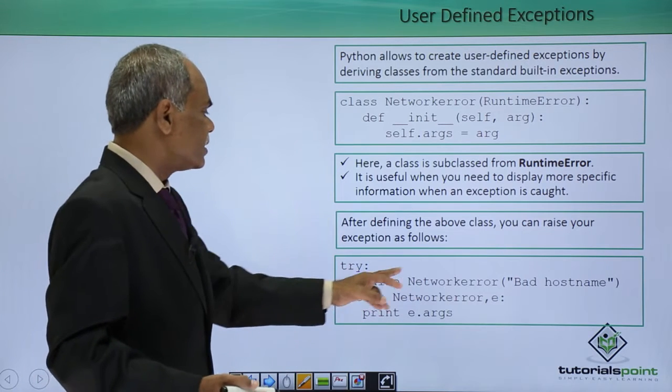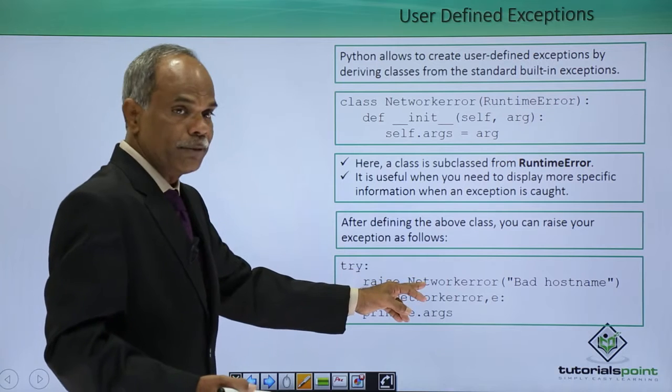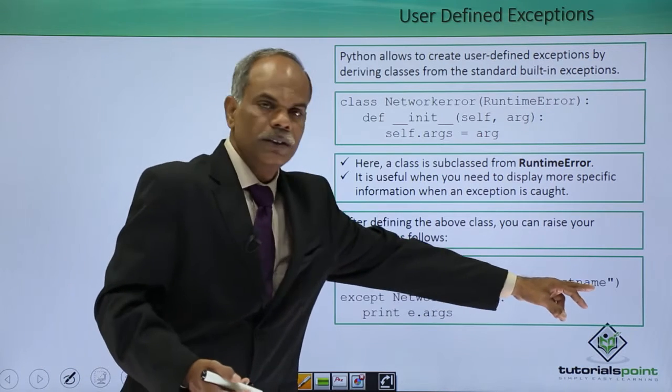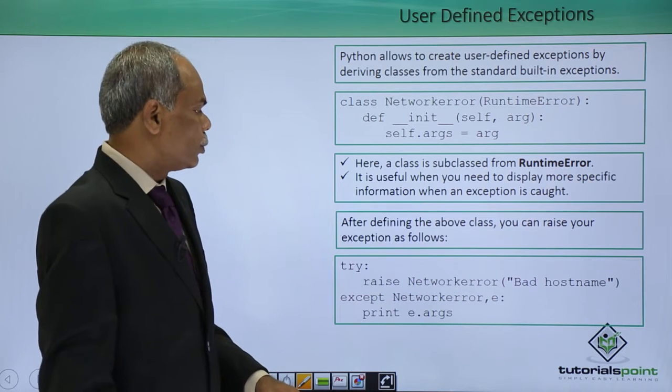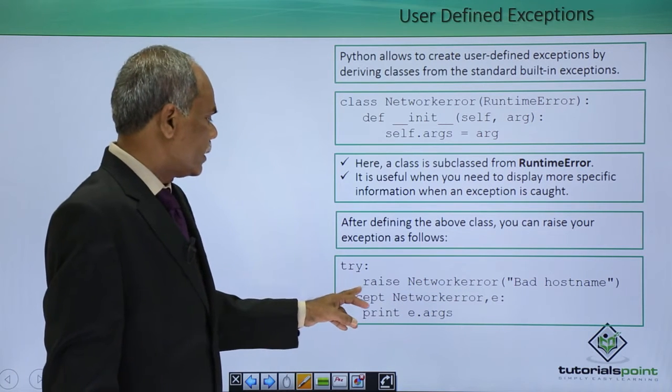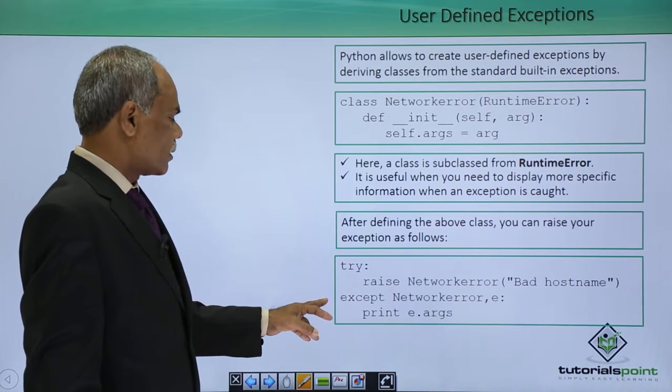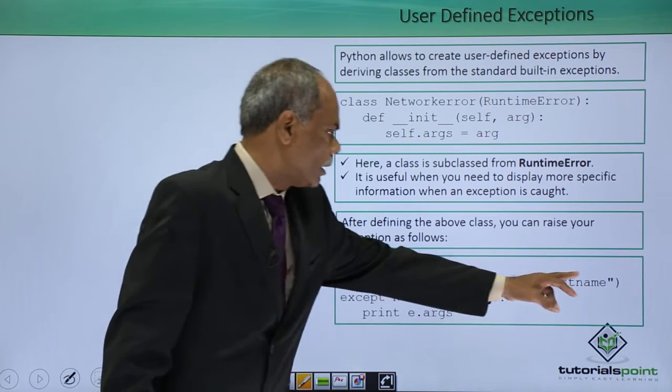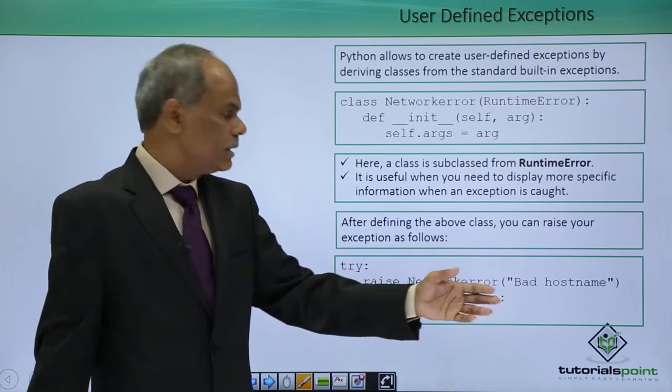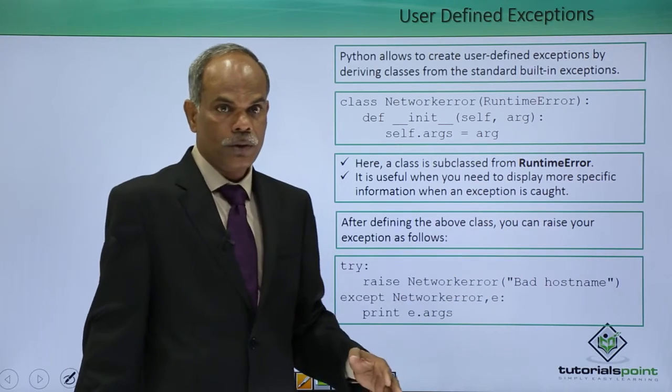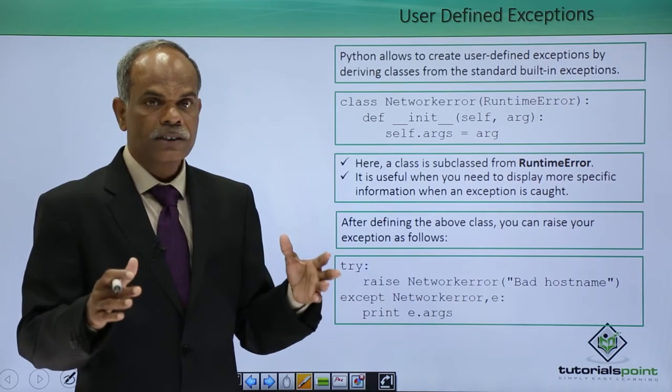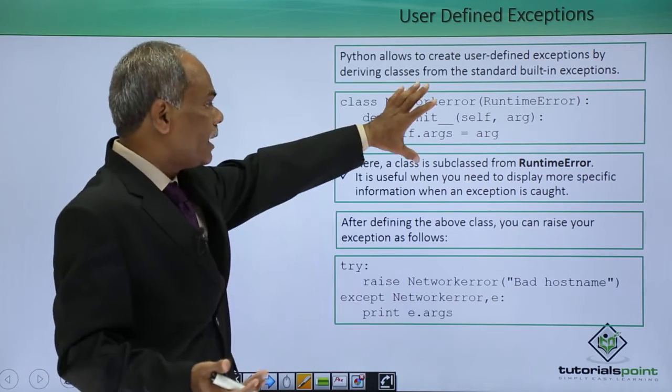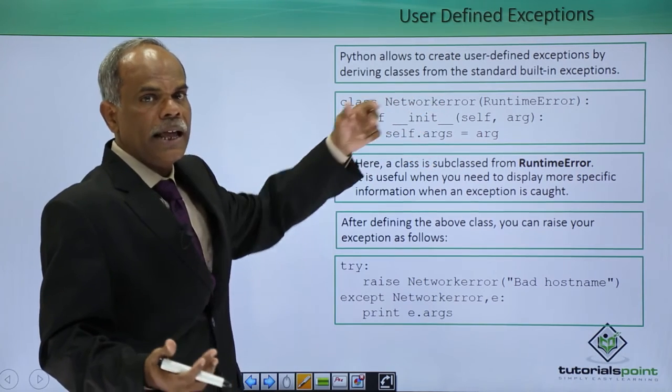This is the class, the type of the error exception. Raise NetworkError with the argument to be provided to it. You can catch it with the help of except NetworkError as e, then print e.args. It will print the bad hostname. That is how you can define and raise a user-defined exception.